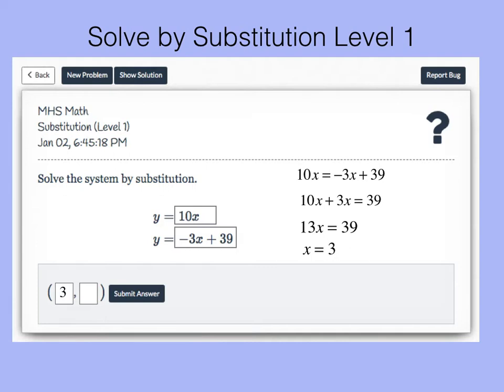I'll pick the easier equation y equals 10x. So we'll substitute x for 3. And we know that the y value of the solution is now 30. And so the solution that I would type into the Delta Math box would be 3 comma 30. I would submit that answer and that would be correct.